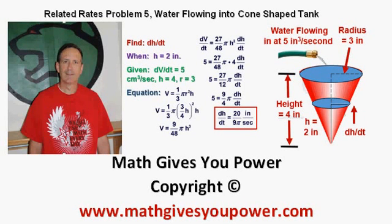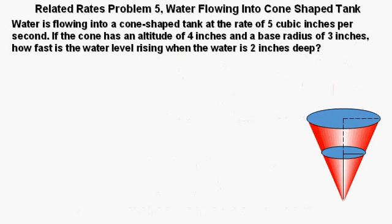Related Rates Problem 5: Water Flowing into Cone Shaped Tank. Water is flowing into a cone-shaped tank at the rate of 5 cubic inches per second. If the cone has an altitude of 4 inches and a base radius of 3 inches, how fast is the water level rising when the water is 2 inches deep?